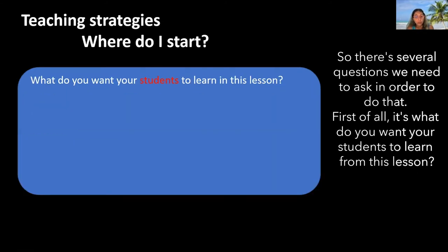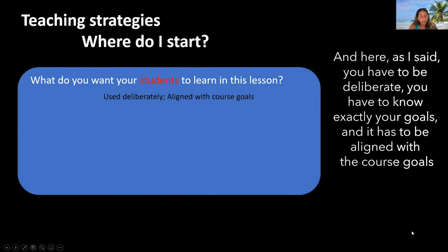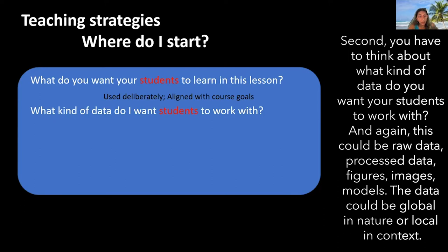There are several questions we need to ask in order to do that. First, what do you want your students to learn from this lesson? You have to know exactly your goals, and they have to be aligned with the course goals. Second, you have to think about what kind of data you want your students to work with — this could be raw data, processed data, figures, images, or models. The data can be global in nature or local in context.